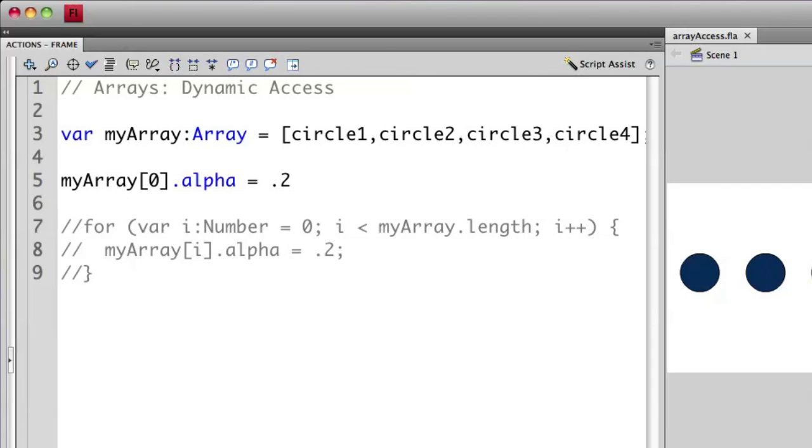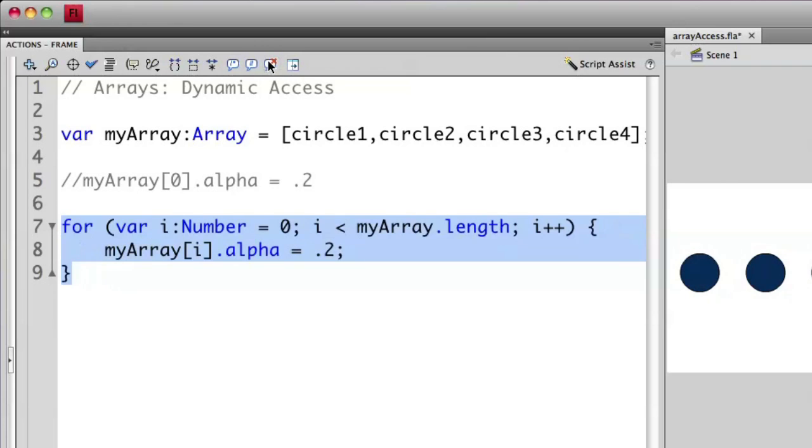Now using this method, I can go through every single object in this array as a loop. Let me comment out line 5 and uncomment lines 7 through 9 to show you how this works.